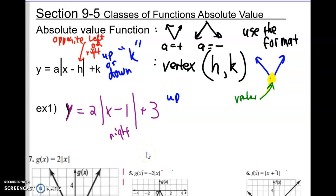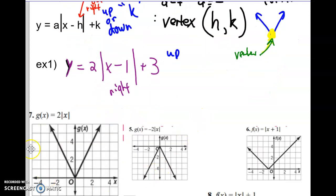This is section 9.5 in the book. The absolute value function has the format y equals a absolute value x minus h plus k. The number in the front, a, tells you if it opens to an upward V or a downward V. The trick is the middle.